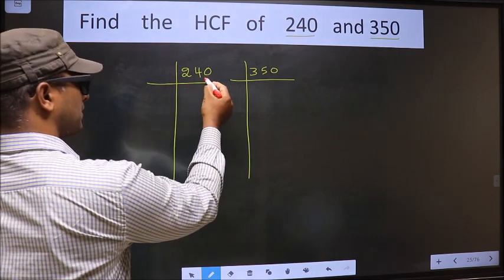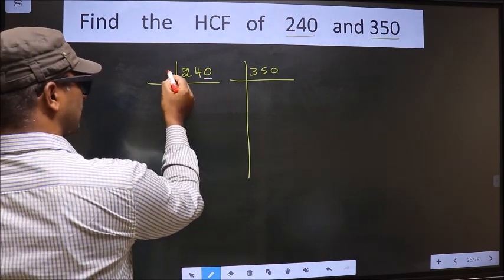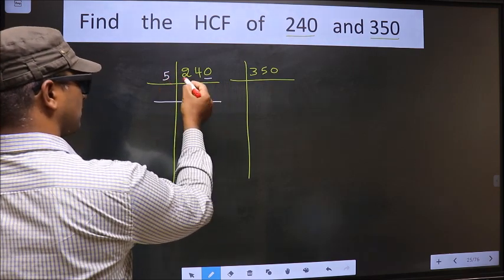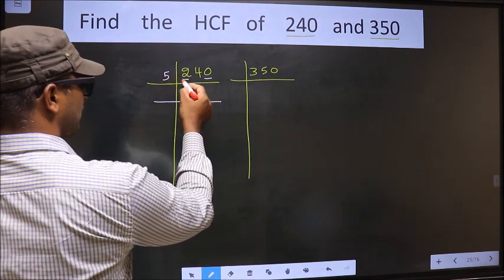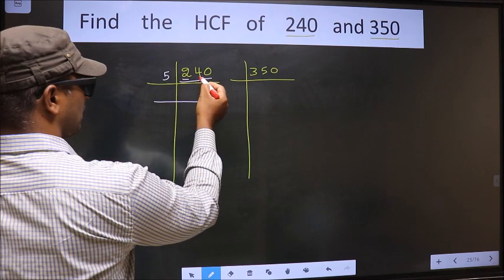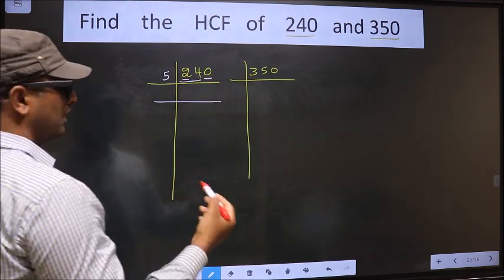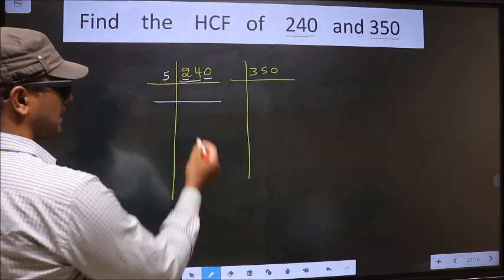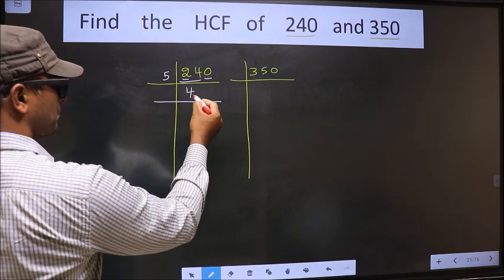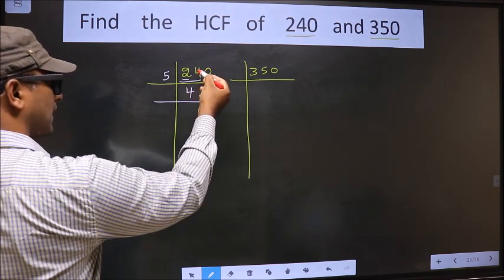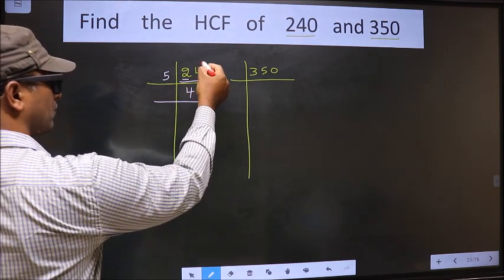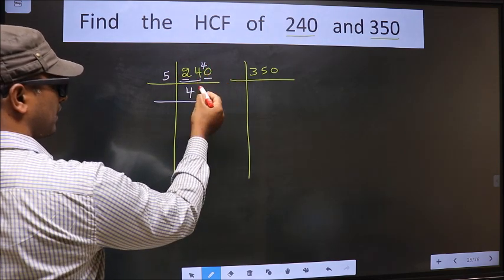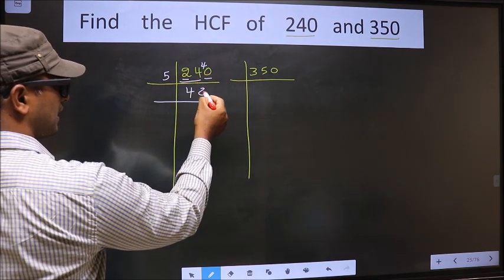For this number, the last digit is 0, so we take 5 here. The first number is 2; 2 is smaller than 5, so we take 2 numbers, that is 24. A number close to 24 in the 5 table is 5×4=20. 24 minus 20 is 4, carried forward making it 40. When do we get 40 in the 5 table? 5×8=40.